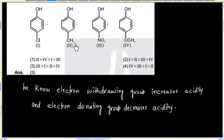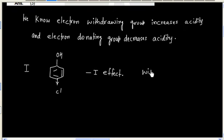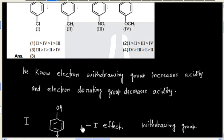So let us discuss one by one. First molecule is this one. Now in this case chlorine will show minus I effect. That is it will withdraw electron. So chlorine is a withdrawing group.